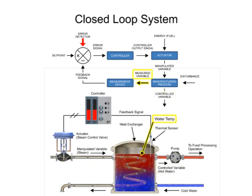Measured variable monitors the status of the controlled variable. Water temperature is the measured variable in the process. The measurement device senses the measured variable and produces an output signal that represents the status of the controlled variable. The thermal sensor that measures the water temperature in the heat exchanger is the measurement device.